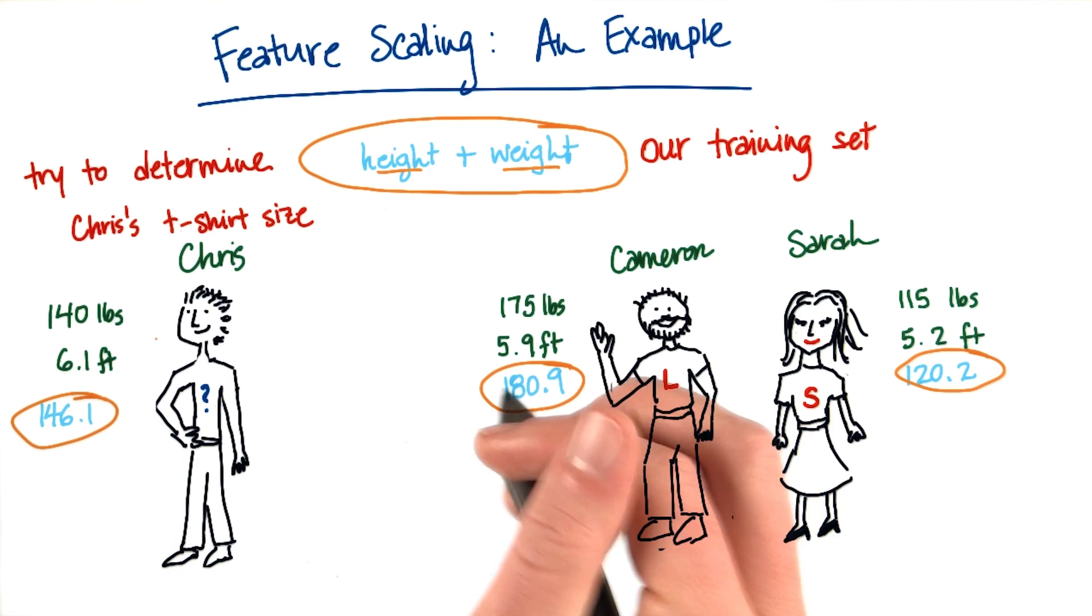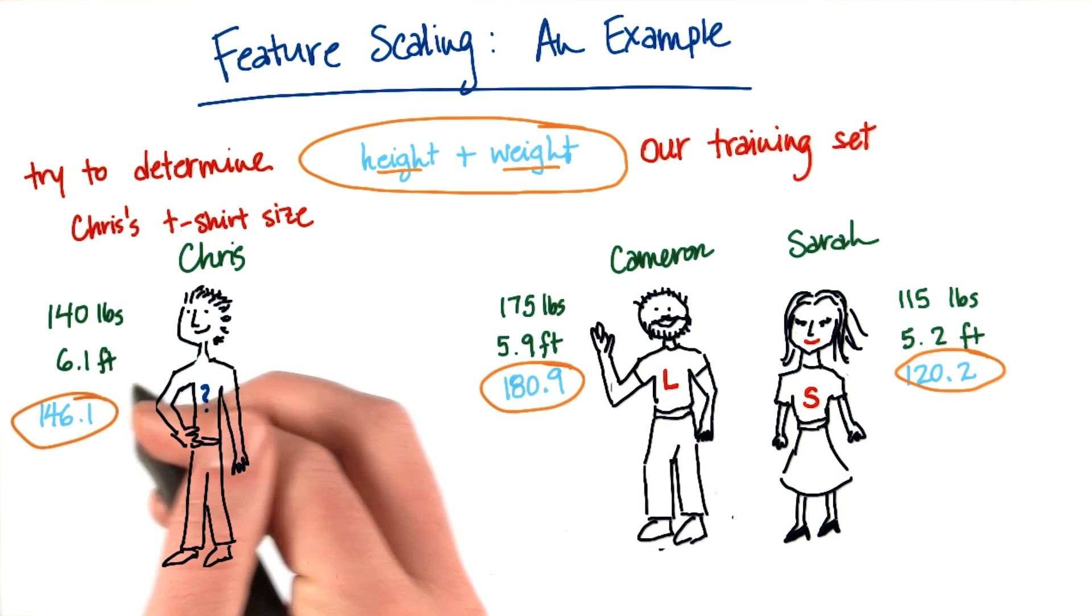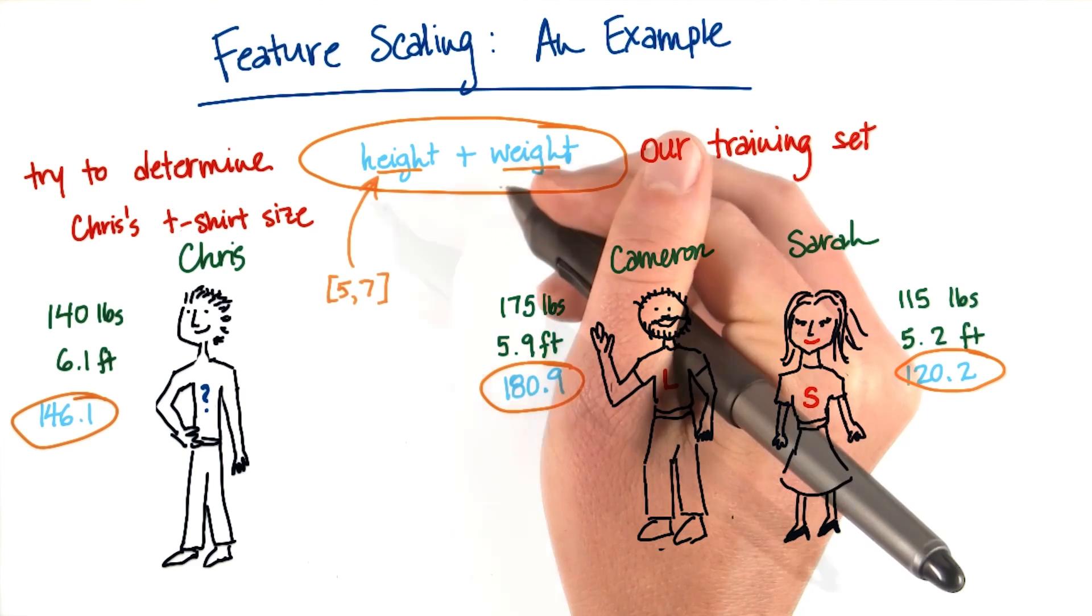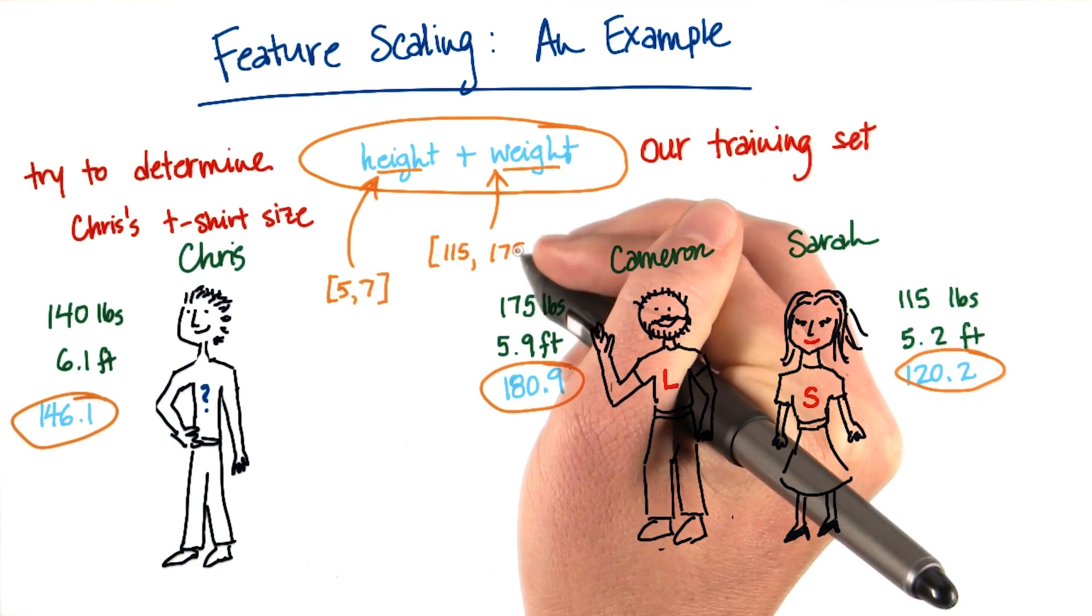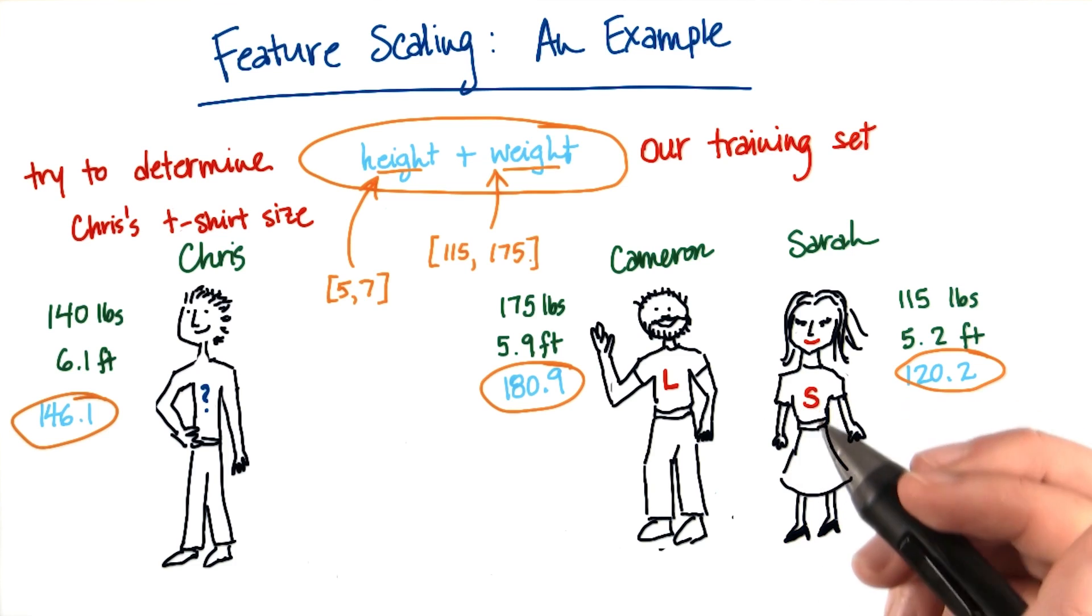The height is going to be a number that generally goes between, let's say, the numbers of 5 and 7. The weight, on the other hand, takes on much larger values, between 115 and 175 pounds in this example.